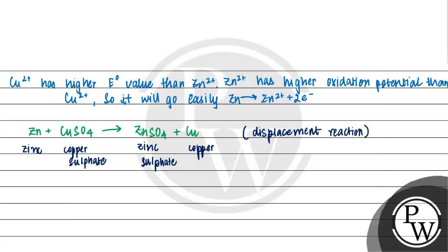So, we can say zinc has displaced another element which is copper from copper sulfate solution.